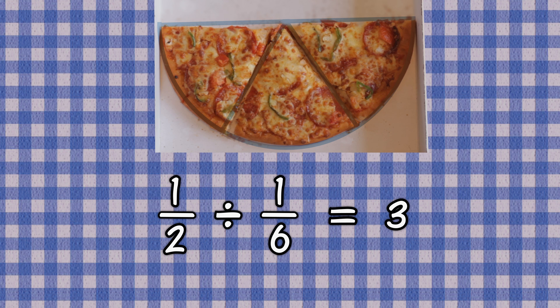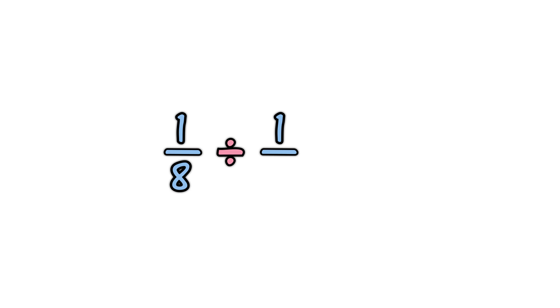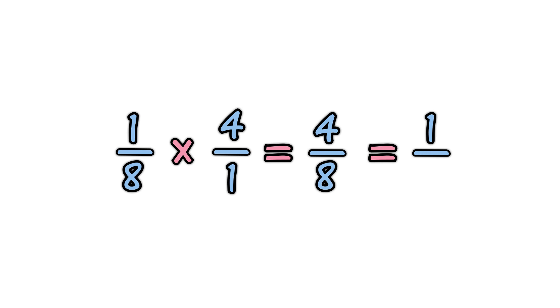Here is another example. One-eighth divided by one-quarter. Turn the second fraction upside down. One-quarter becomes four over one. Four-eighths is simpler as one-half.